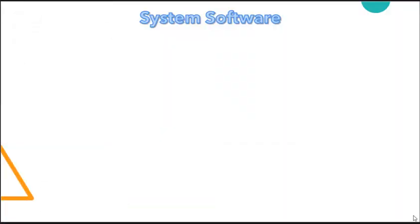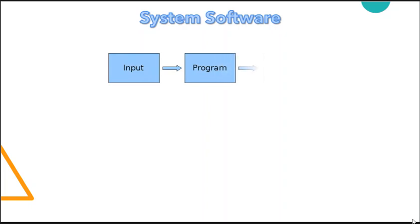System software is defined as a collection of programs that controls the overall operation and internal working of a computer system. It reads data from input devices and transfers the processed information to the output devices. System software is a set of programs that control and manage the operations of computer hardware. It also helps application programs to execute perfectly. System software is designed to control the operation and extend the processing functionalities of a computer system.